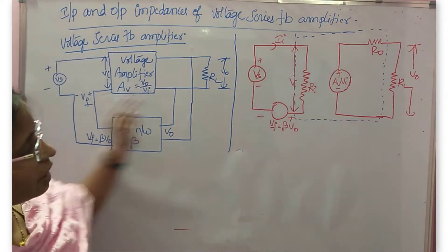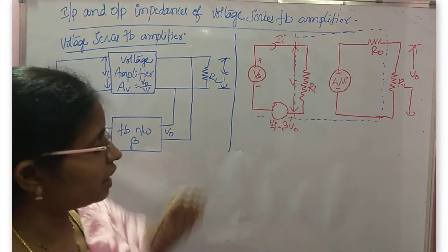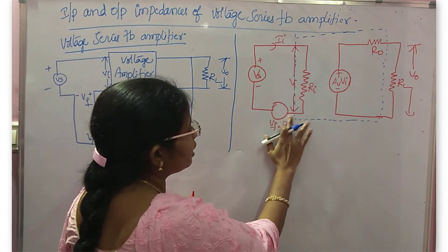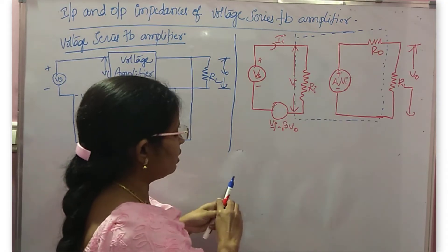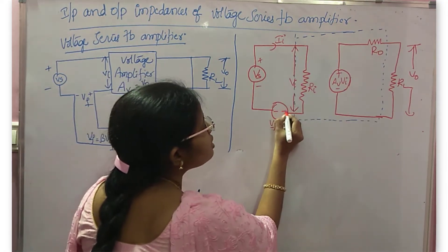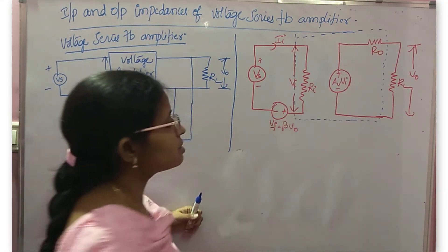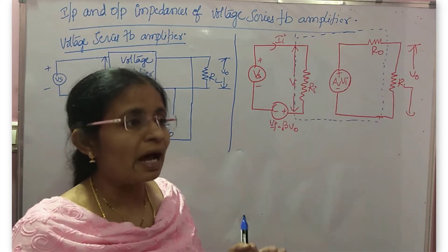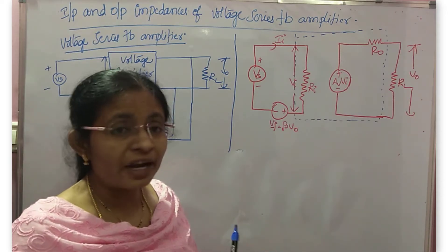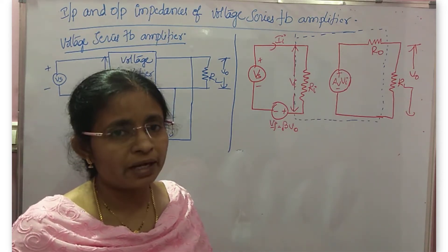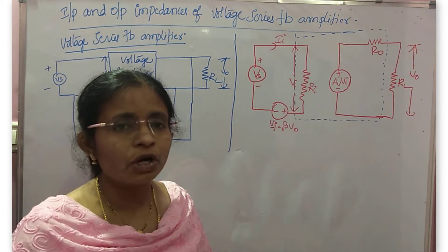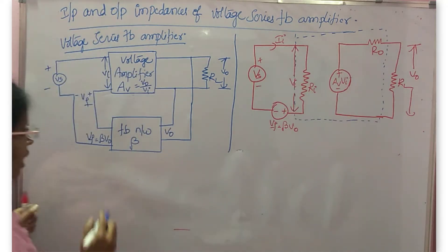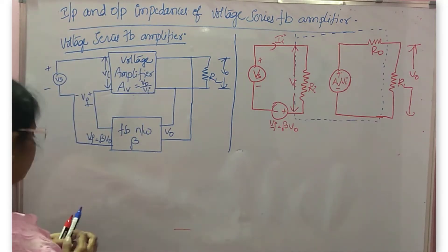In the input side, we are mixing VF. That is the reason we are taking the voltage VF here, with minus-plus polarity. So now we will see how the feedback affects the input and output impedances of your voltage amplifier. Let me derive first the input resistance.